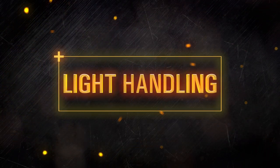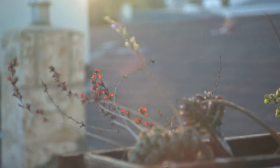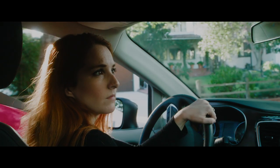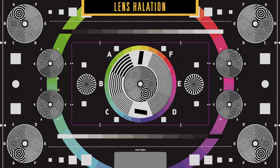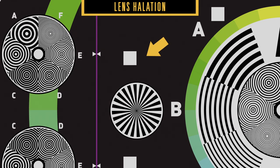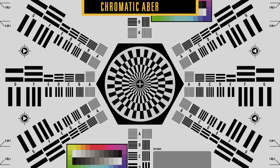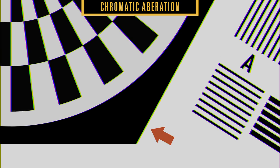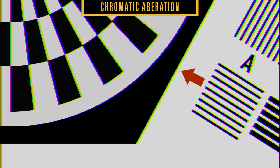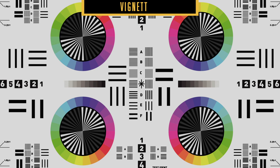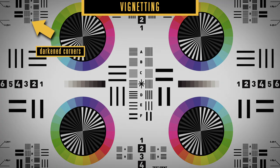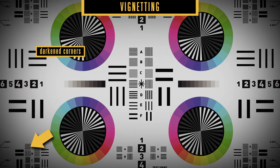Every lens design is unique and light handling characteristics play a major role in what the end result of the lens looks like. Looking at the high contrast areas of a focus chart, you can see several traits that identify a lens. If the light white areas glow or spill into the dark areas, this is called halation. Also in the high contrast areas where dark or black meets white light areas, if you see colored lines where the edges meet, that's chromatic aberration — oftentimes the colored lines are purple or green. Finally, if you look towards the edges of the frame, you might see a reduction in light, or a vignette in the corners.